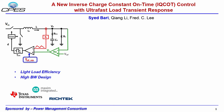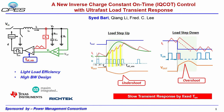Today, constant on-time control is widely used in the industry for light load efficiency and high bandwidth design capability. But from a transient point of view, it has some limitations — for a fixed on-time, the inductor current cannot increase very fast because of the minimum off-time and on-time ratio, which might cause undershoot at the output. And for the load step-down case, if the load step-down occurs at the beginning of the fixed on-time, it might create a large overshoot at the output.